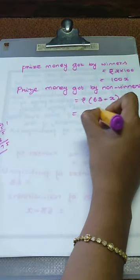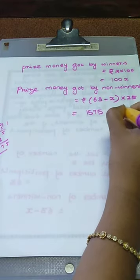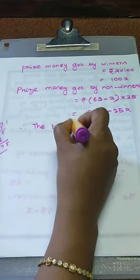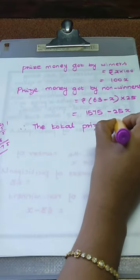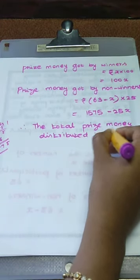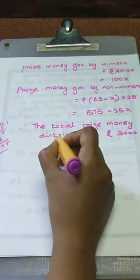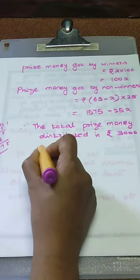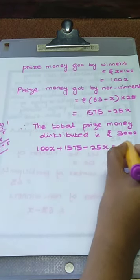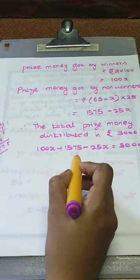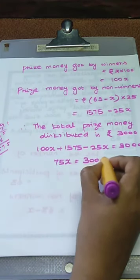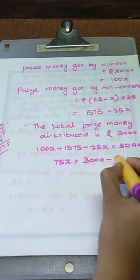Multiplying: 63 into 25 equals 1575, minus 25x. The total prize money is Rs. 3000. So adding the values and equating with 3000: 100x plus 1575 minus 25x equals 3000. Subtracting: 100x minus 25x is 75x. Transposing 1575 to the RHS gives 75x equals 3000 minus 1575.